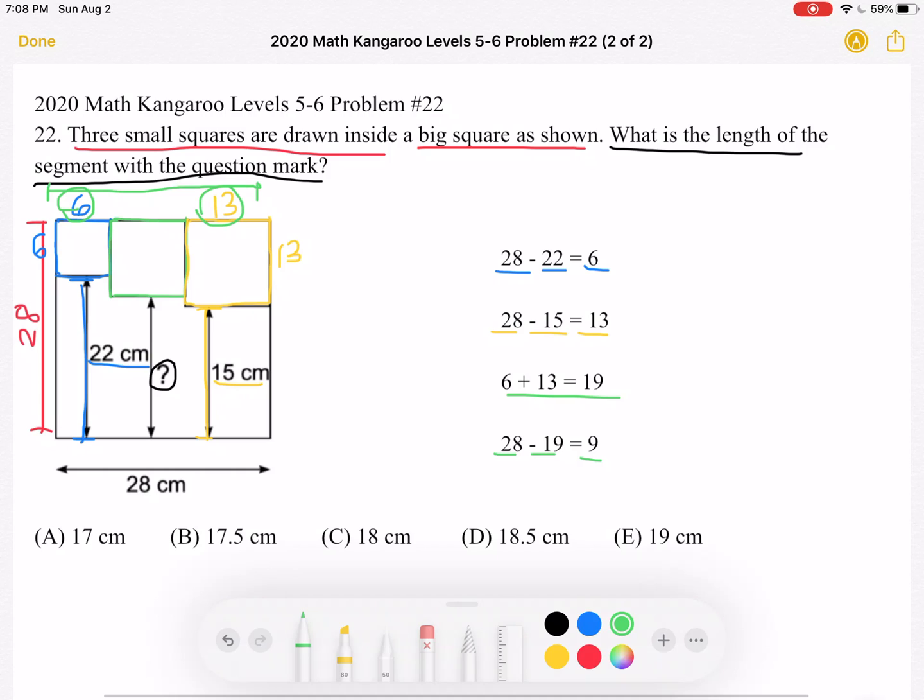is equal to 9. That means that the side length of the green square is 9 for the entire length to be 28.